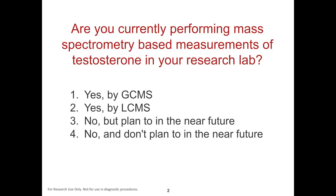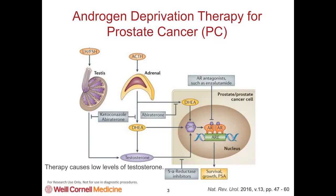So what are some of the reasons we might want to be measuring testosterone by mass spectrometry? On my first slide next to the testosterone was a figure showing deaths from cancer in the United States in males. Prostate cancer ranked number two with a little over 26,000 deaths annually, over 160,000 new cases per year, and statistics show that about one in seven men will be diagnosed with prostate cancer during their lifetime.